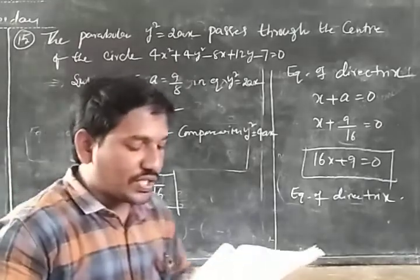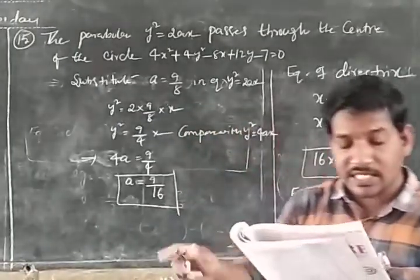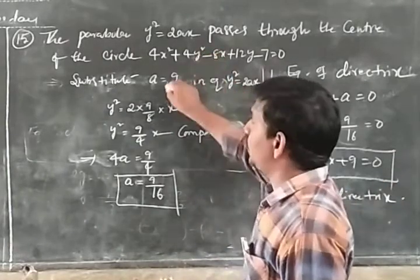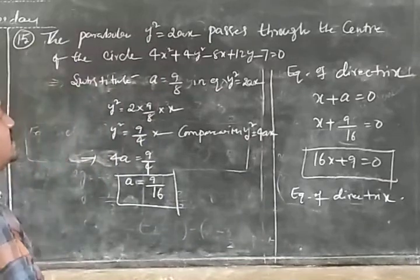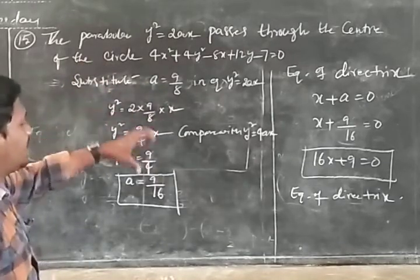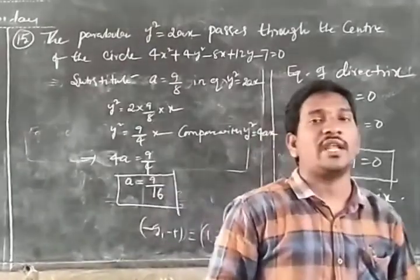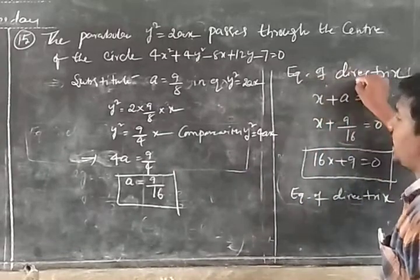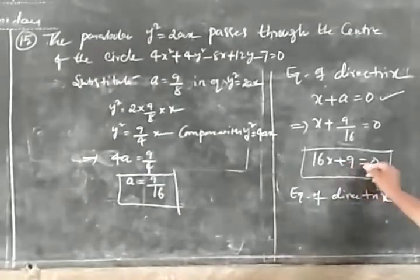Summary of Problem 15: The parabola y² = 2ax passes through the center of the circle 4x² + 4y² − 8x + 12y − 7 = 0. We found the center (1, −3/2), computed a = 9/8, and the equation of the directrix is 16x + 9 = 0. The answer is the third option.